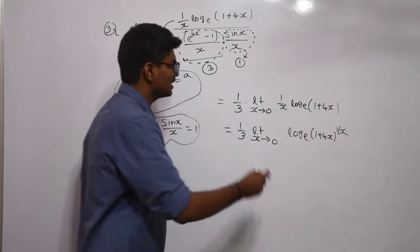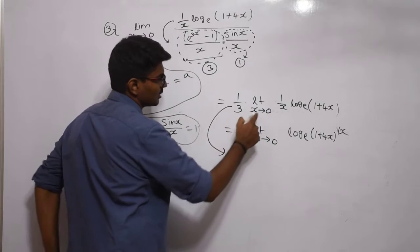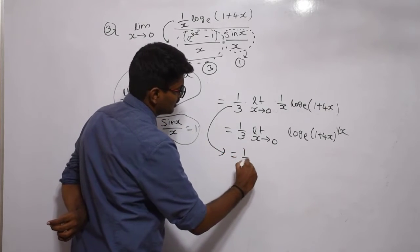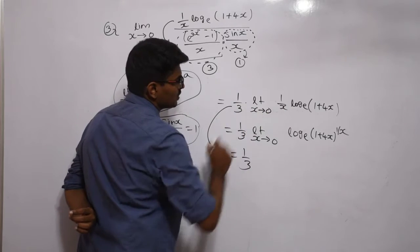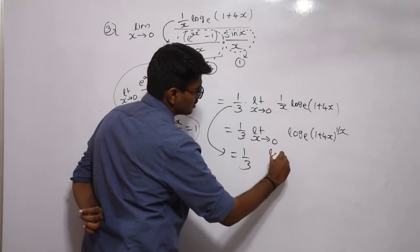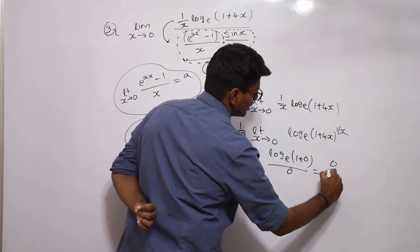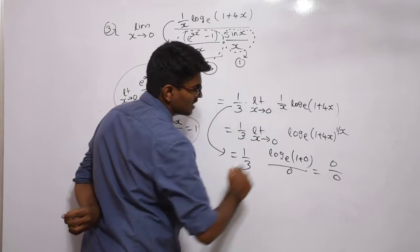Instead of using the standard case directly, let's directly substitute the limit. What will happen? If I substitute x = 0: log_e(1+0)/0, which is 0/0 since log(1) = 0. This is an indeterminate case.